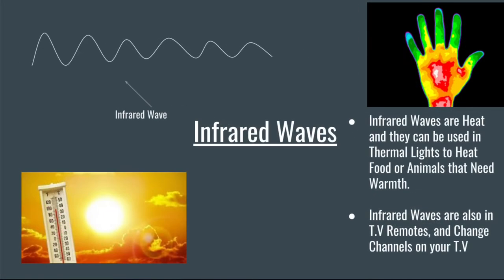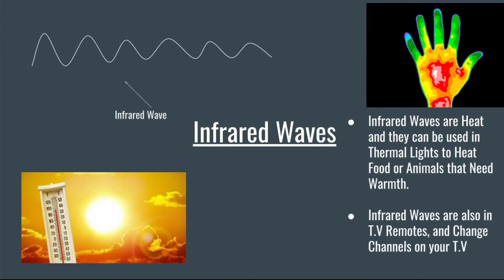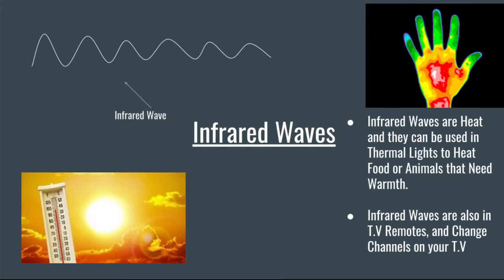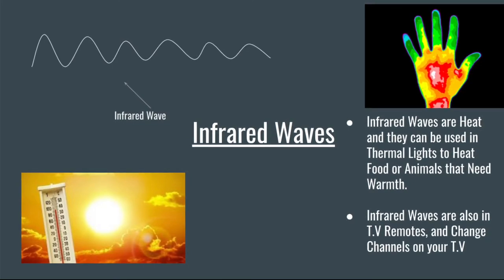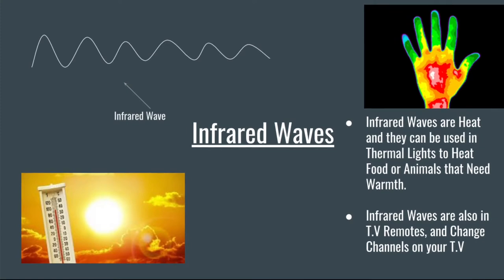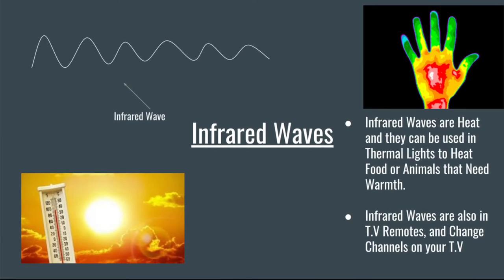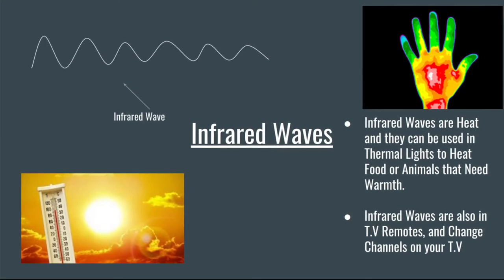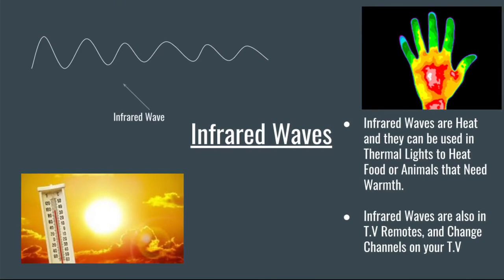Infrared waves have wavelengths from 1 mm to 700 nm and frequencies between 430 THz to 300 GHz. Infrared waves are heat and can be seen through thermal cameras. They are used in heat lamps and remote controls to change the channel on your television.